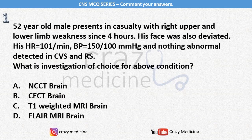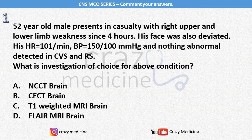First, a 52-year-old male presents in casualty with right upper and lower limb weakness since 4 hours. His face was also deviated. His heart rate is 101 per minute and blood pressure is 150 by 100 mmHg, and nothing abnormal detected in CVS and RS. What is the investigation of choice for the above condition? Friends, this is a classic history-based question with some confusing points which can be asked in NEAT-PG. Comment your answer in the comment section.